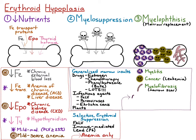Or causes that can affect all cell line production. With these, you can see any combination of non-regenerative anemia, neutropenia, and thrombocytopenia.